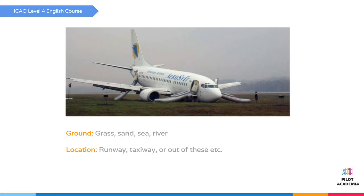The next section is the foreground. Grounds and location information may be the topic. In the foreground, the aircraft is standing on the grass. In front of the left front slide, there is a person, maybe from maintenance, who will take care of the aircraft after the incident.